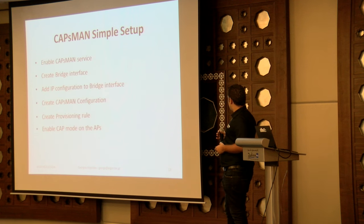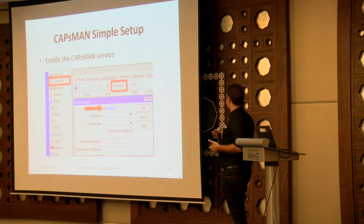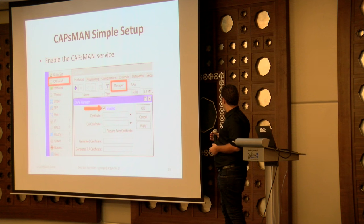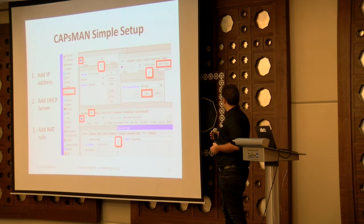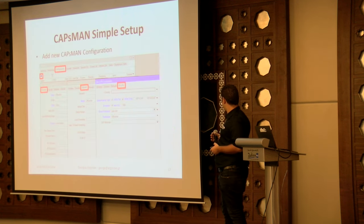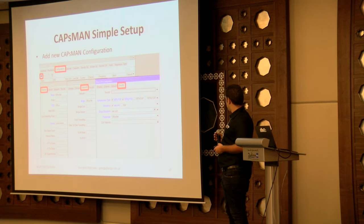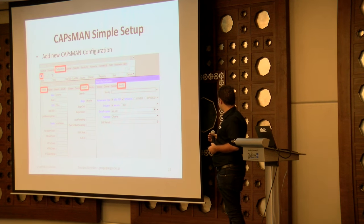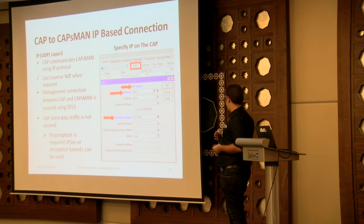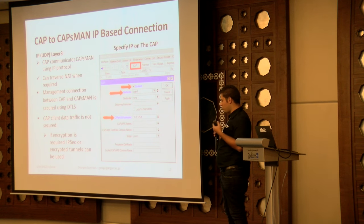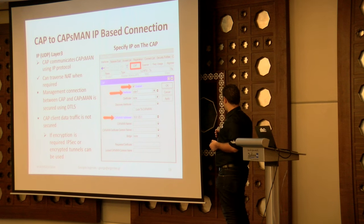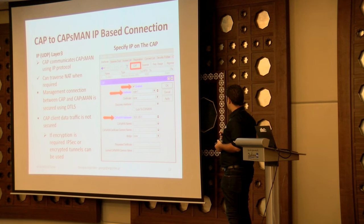Simple setup guide: we have to enable the service, create a bridge, add IP configuration, and click CAPsMAN configuration. This is how we go to the CAPsMAN controller and enable it. We have to add an IP, a DHCP server, add the SSID, and add the encryption. Then we go to the access points to tell them where to connect to the CAPsMAN. We can either tell the access point to connect to an IP, or use discover interface to communicate over layer 2, but this is IP-based.